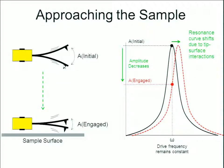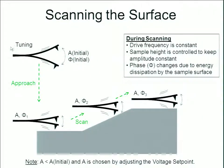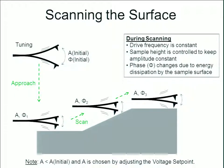We set the drive frequency in air, engage the sample, and observe a shift — in this case, a shift in amplitude. The shift is due to tip-surface interactions. The piezoelectric is still controlled by the feedback loop in order to maintain a constant height, trying to keep that amplitude constant. Every time it changes, the feedback loop sends a signal to the piezo to move the sample up or down accordingly.